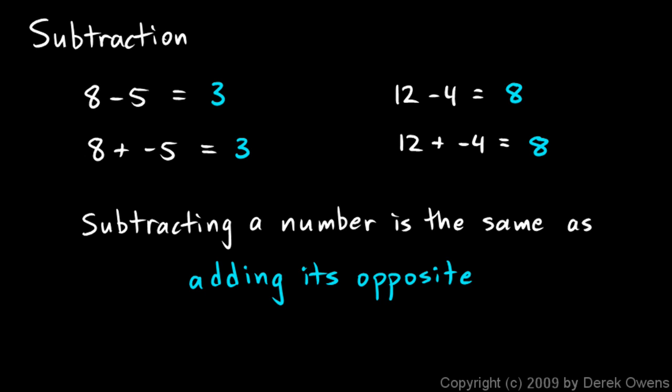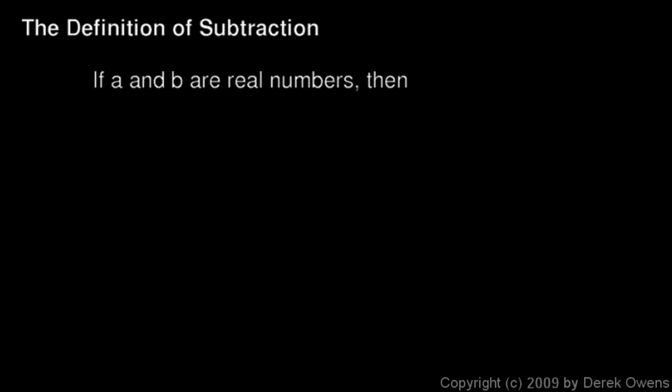And in fact, that's the definition of subtraction. Mathematicians define subtraction based on what we already know about addition. So let's write this down mathematically. The definition of subtraction: If a and b are real numbers, then a minus b is, by definition, a plus negative b. Or think of the negative sign as meaning opposite, a plus the opposite of b.